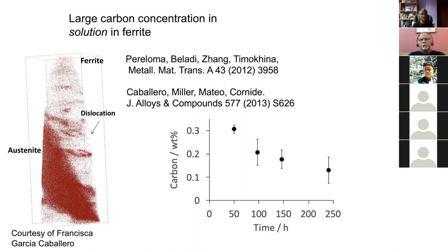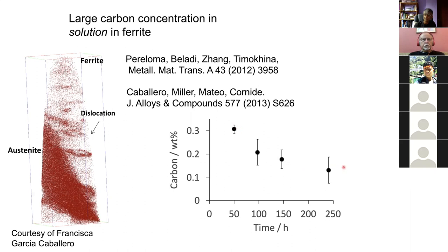Modern studies by Pereloma and Caballero around 2012-2013 used improved atom probe to collect many more atoms and build a detailed picture. The specimen is a thin needle, and each dot is an atom — in this case only carbon atoms form the image. This is austenite, and these are dislocations where carbon has segregated. However, there is a lot of carbon not at dislocations — it's actually in solid solution at quite large concentration, remaining there even after the sample was held at 200°C for 10 days. It's quite bizarre.